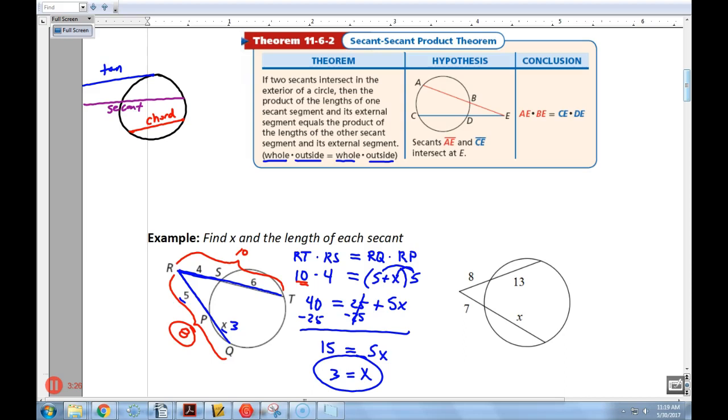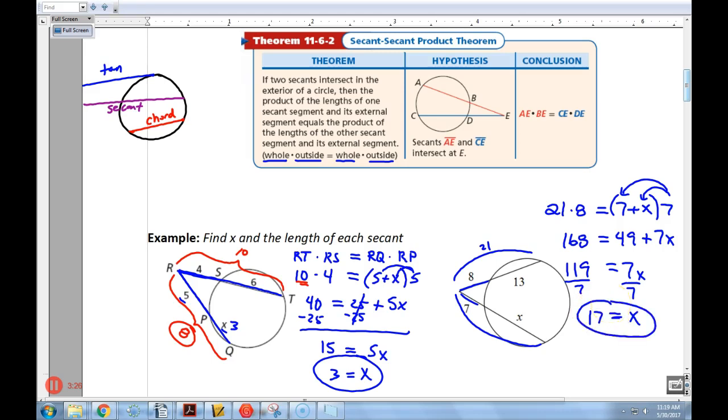All right, solving this one here, I do the whole piece, all of that, times just the outside, is going to equal the whole piece, make sure to put that in parentheses, times just the outside. Do my algebra, 168 is 49 plus 7X. I just distributed that 7 there. And minus 49 from both sides, I get, what's that, 119. And then divide by 7, divide by 7, and X, 7 goes in there, 1, 17 times. So X is actually 17.